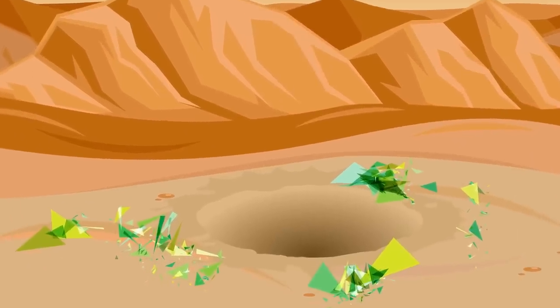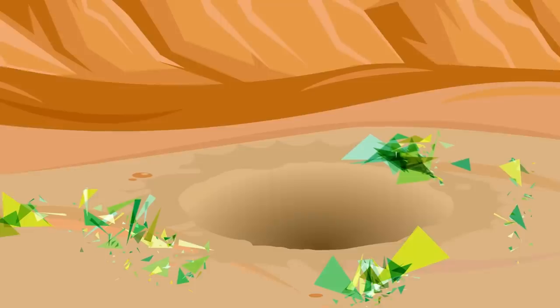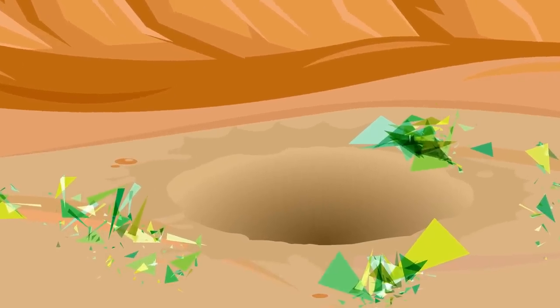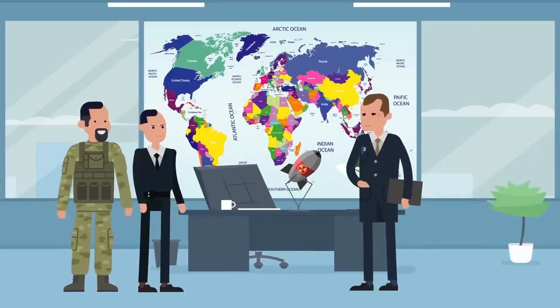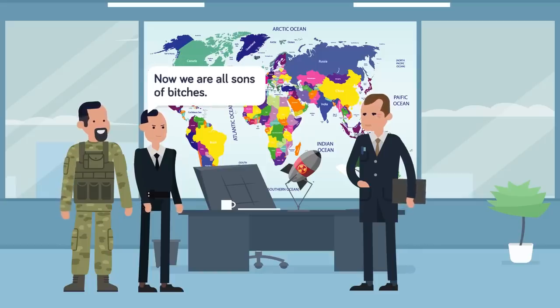18. The Trinity test bomb melted desert sand around it into a mildly radioactive light green glass, which would be named trinitite. 17. Keith Bainbridge, one of the scientists of the Manhattan Project, said just after the successful test, now we are all sons of bitches.